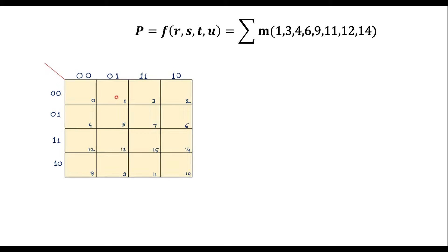This is the KMAP. The four variables are R, S, T, and U. R and S are here, and T and U are here. These are the cell numbers of the four variable KMAP. In the corresponding cell numbers, we have to write 1.